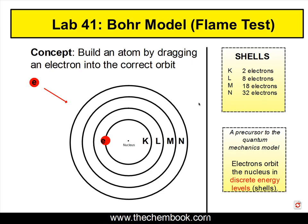Once the electrons are in the shell, they remain in that shell and they take an orbit around the nucleus. Here we have one electron in the K orbit and that electron is the closest to the nucleus, so it has a certain amount of energy. And as we go from the K to the L, the energy levels are different as we move away.